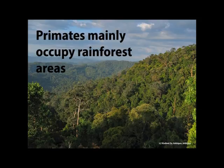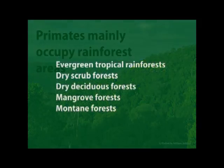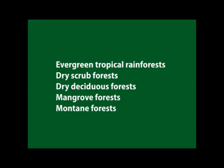The evergreen tropical forests are warm and wet. They have a short dry season and a high rainfall. Dry scrub forests are dry, with forests along river banks.